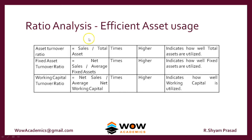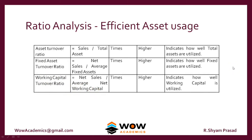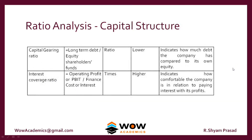Turnover ratios tell us about the efficient usage of assets — the higher the ratio, the better, meaning we are using the assets to a high degree. Asset turnover ratio tells us how efficiently we are using our assets overall, fixed asset turnover ratio shows how well we are using fixed assets, and working capital turnover ratio tells how well we are using our working capital.